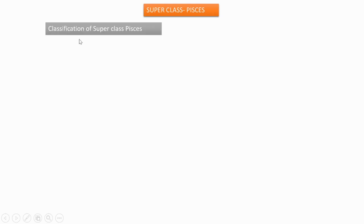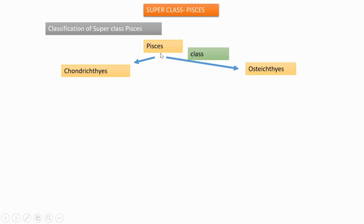Good morning dear students. Today we are going to start the next chapter: Superclass Pisces. In the last class we learned about Subphylum Vertebrata. We can start with the classification of Superclass Pisces. Pisces is first classified into two classes: Chondrichthyes and Osteichthyes. These two classes are again subdivided into subclasses.